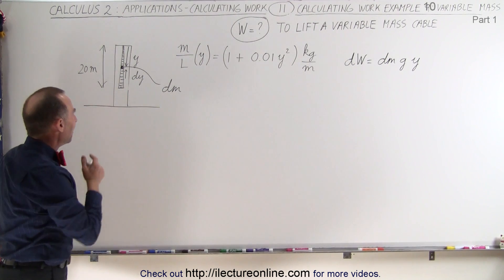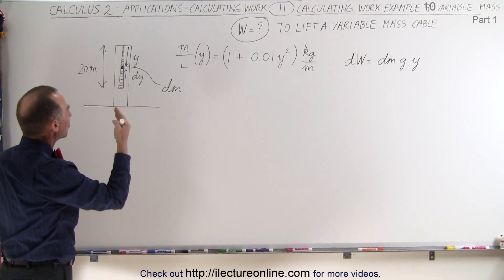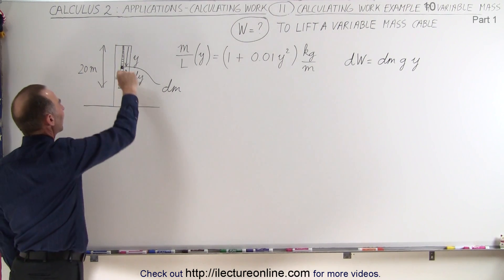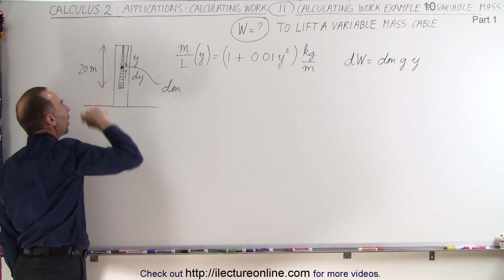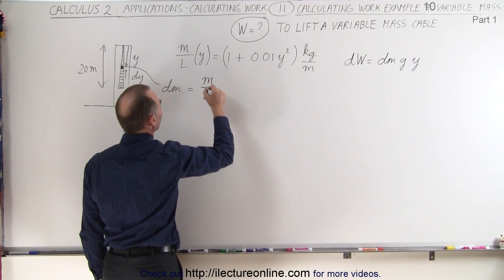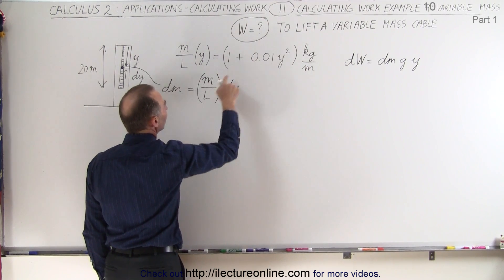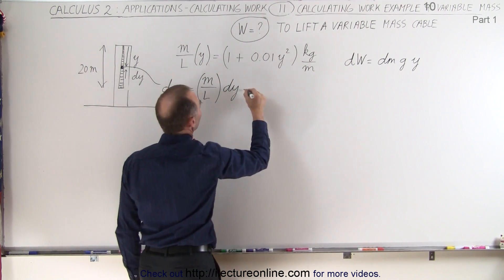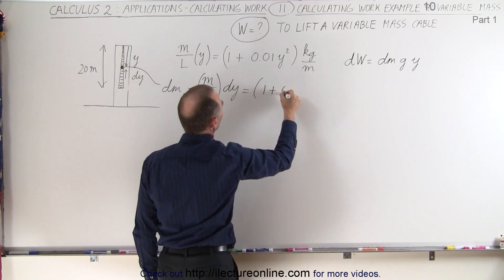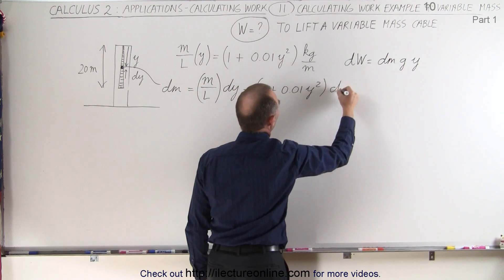But now we have to define dm. How do we define dm? Well, we can take the mass per unit length and multiply it times the length. The length of that is dy. So dm will be equal to the mass per unit length times dy. And the mass per unit length is defined as this. So this becomes equal to 1 plus 0.01y squared times dy.